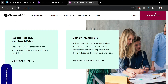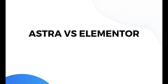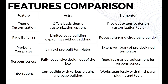Now that we know the overview of both tools, let's start with the features comparison. In terms of theme customization, Astra offers basic theme customization options, while Elementor provides extensive design customization tools. In terms of page building, Astra offers limited page building capabilities without add-ons, while Elementor offers a robust drag-and-drop page builder. For pre-built templates, Astra offers a limited selection, while Elementor offers an extensive library of pre-designed templates. For responsiveness, Astra has full responsive design out-of-the-box, while Elementor requires manual adjustment. For integration, Astra is compatible with various plugins and page builders, while Elementor works seamlessly with third-party plugins and tools.